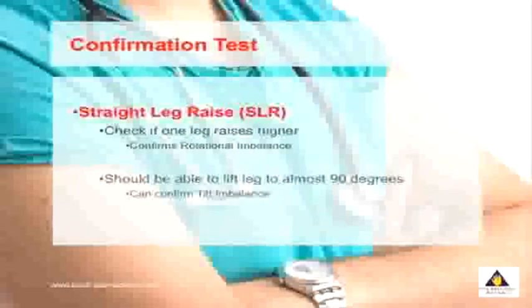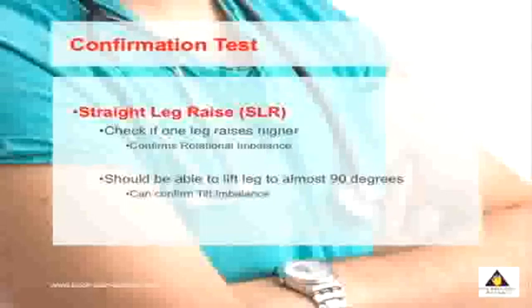There are two things to note. First, you may find you can lift one leg higher than the other — if this is the case it confirms that you have a rotational imbalance. Secondly, you should be able to lift your leg up to almost 90 degrees. If you can't, and both legs are similar, then you may have those tilt type imbalances.